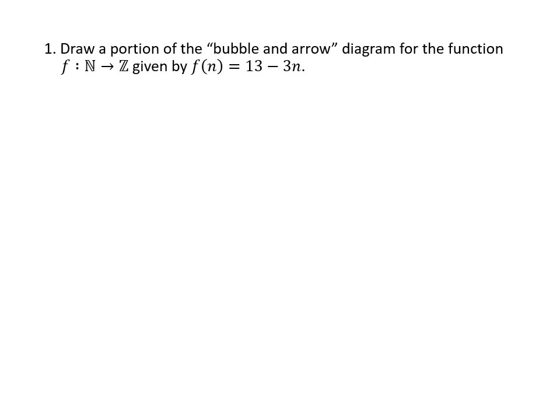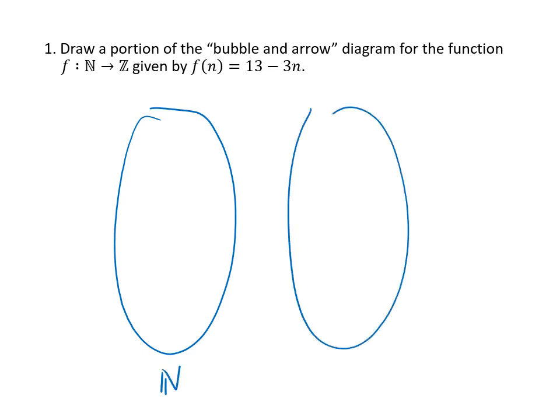So when we talk about bubble and arrow diagrams, we're going to have two bubbles. The first bubble is our domain, which in this case is the natural numbers. Our second bubble is the codomain, which in this case is the integers. We're typically asked to give some number of examples. In this case, they ask us for at least five elements of the domain and five elements of the codomain.